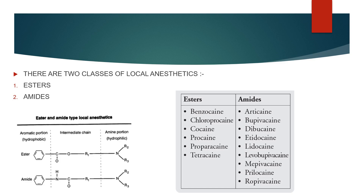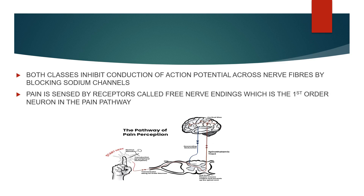There are two classes of local anesthetics, called esters and amides. Both classes inhibit conduction of action potentials across nerve fibers by blocking sodium channels, and thus the perception of pain by the brain.